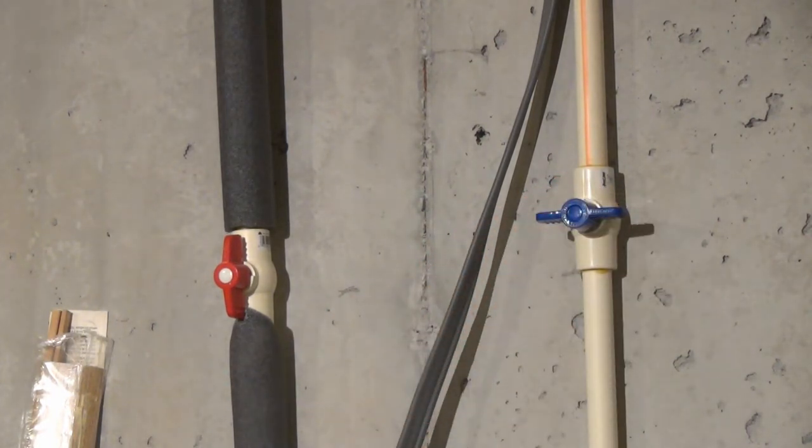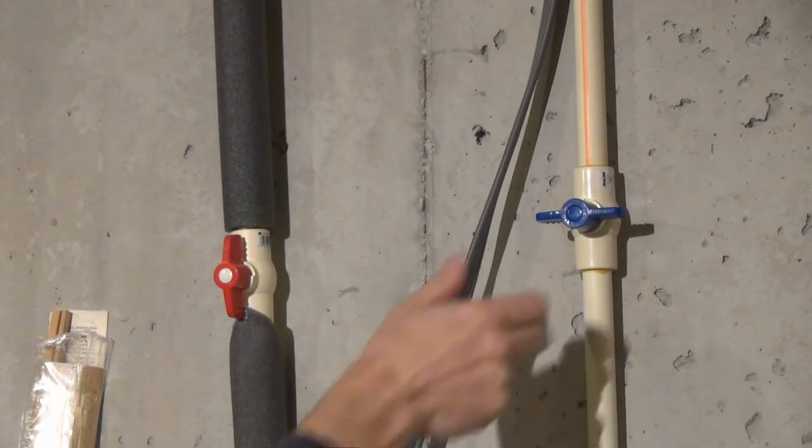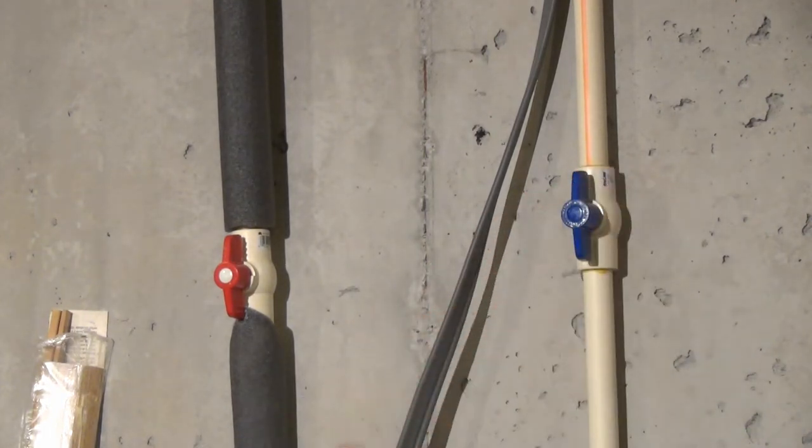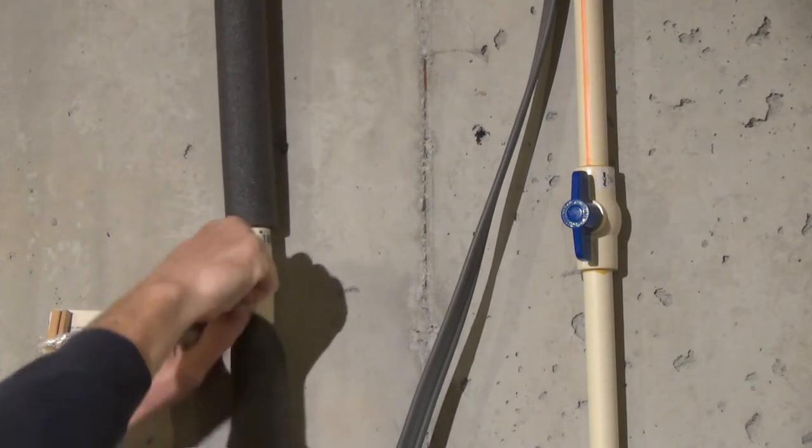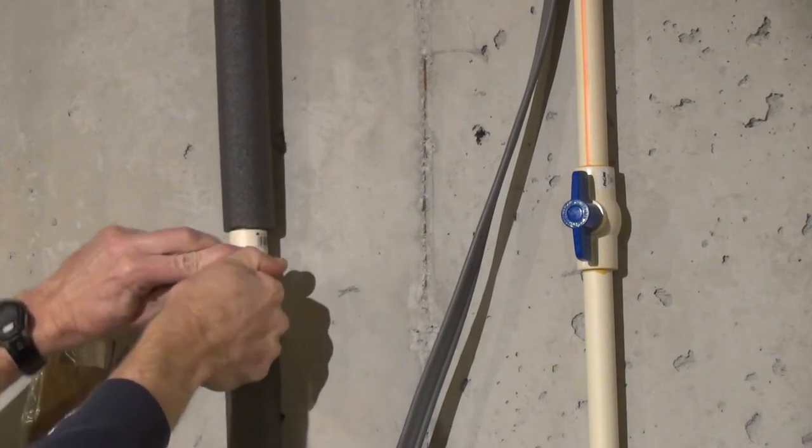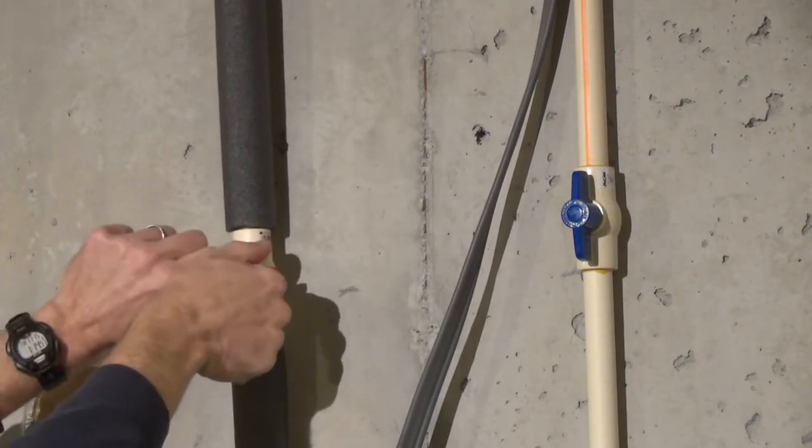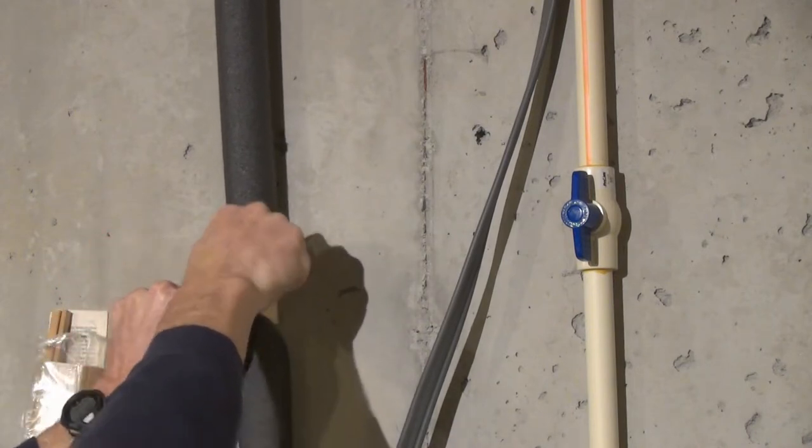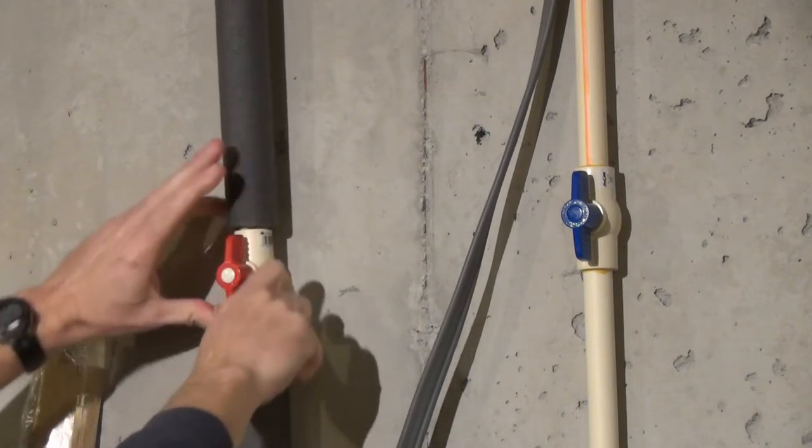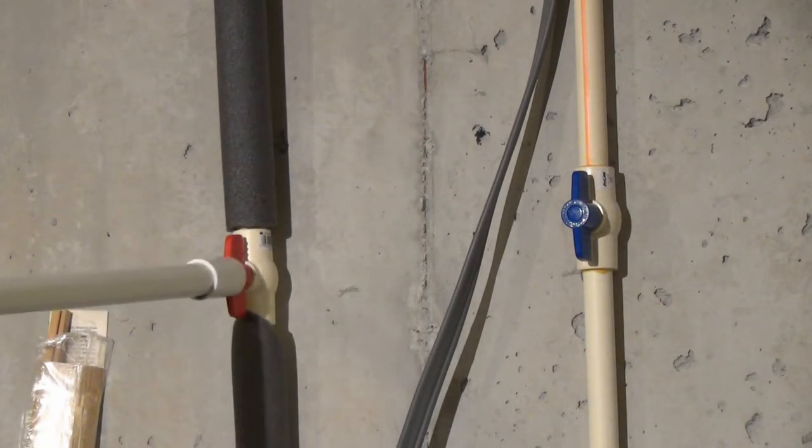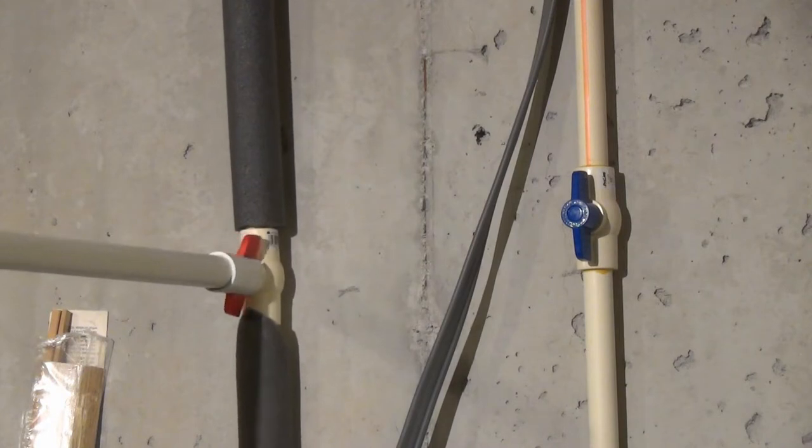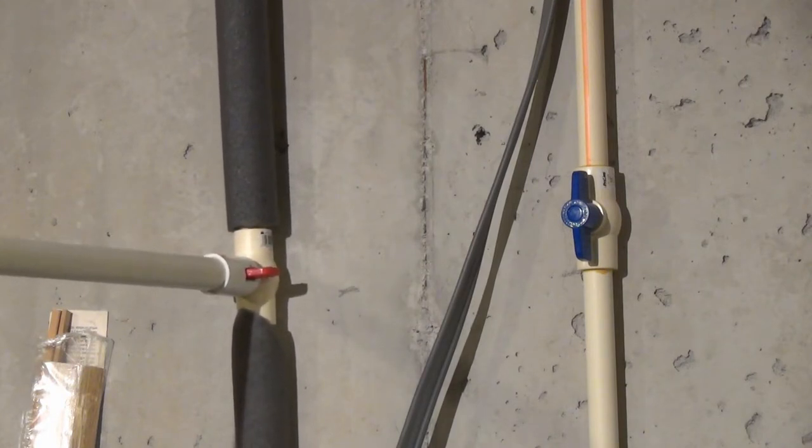The blue valve turns easily by hand. That red one, however, is another story. I made the valve tamer to give me better leverage on the handles and reduce the chances of breaking the handle tabs off on those difficult valves.